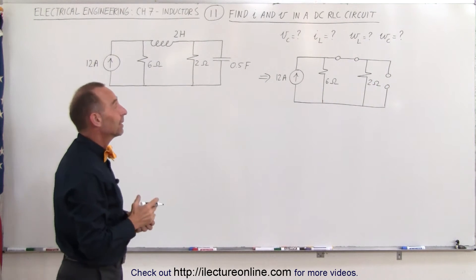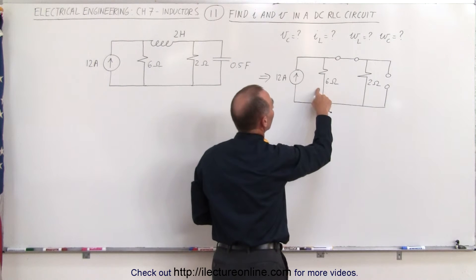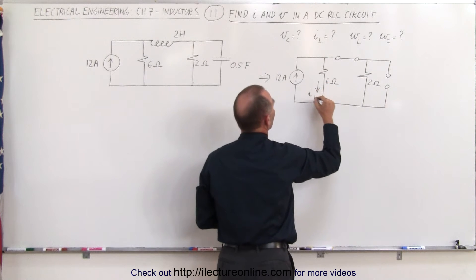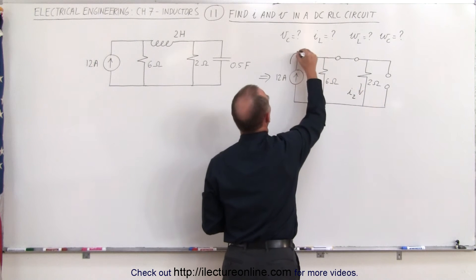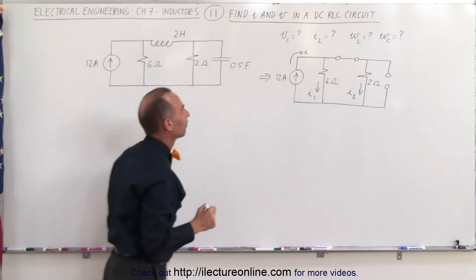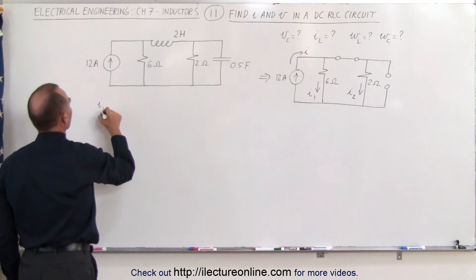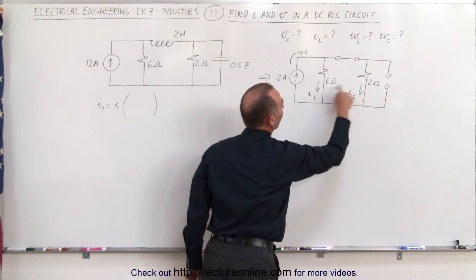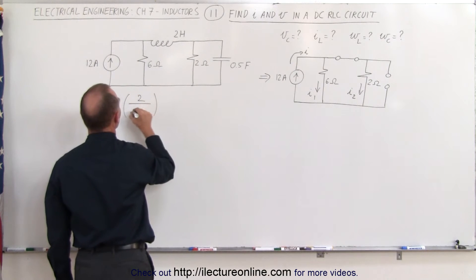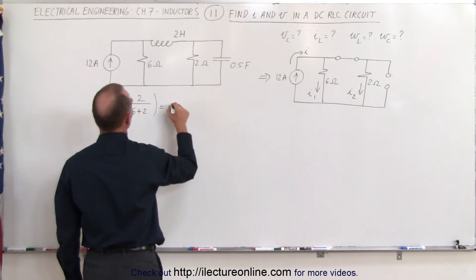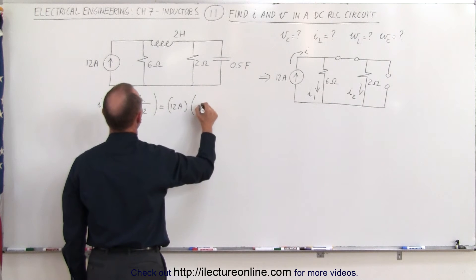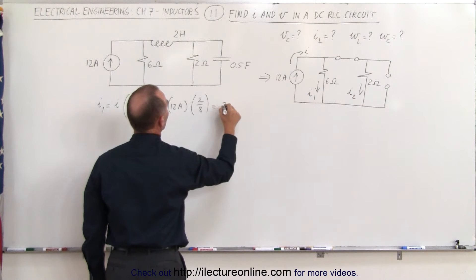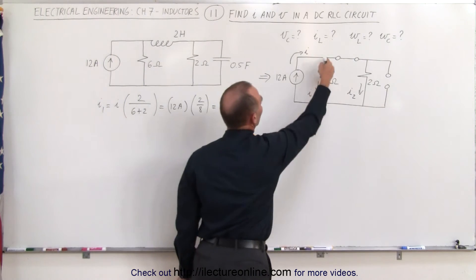We should try to calculate the current flow through each branch. Let's call the current through the first branch I sub 1, and the other I sub 2. The total current I is 12 amps. Using the current divider, I sub 1 equals 12 amps times 2 divided by (6 plus 2), which is 12 times one quarter, giving us 3 amps flowing through the 6 ohm resistor.